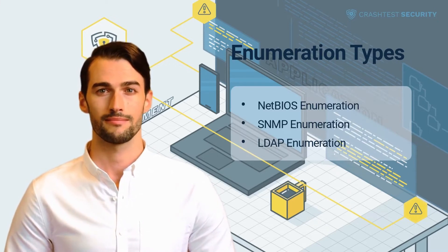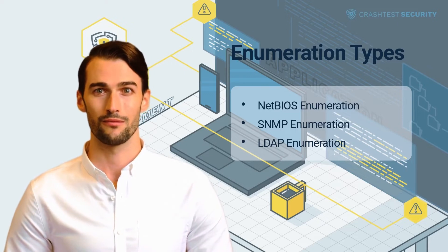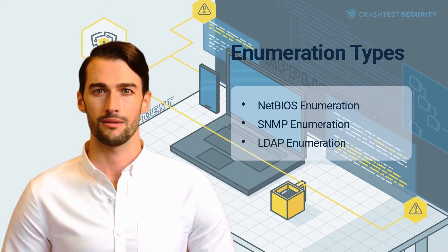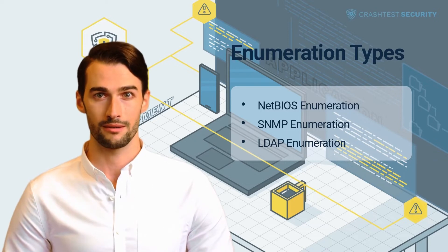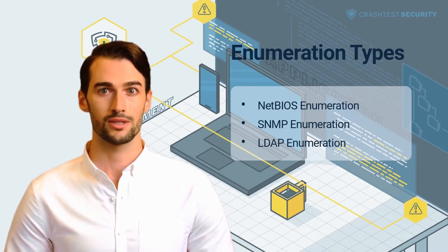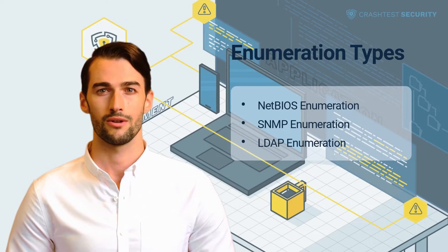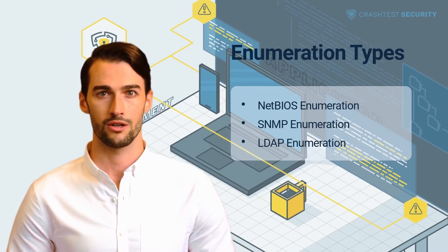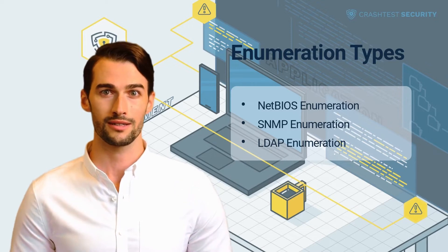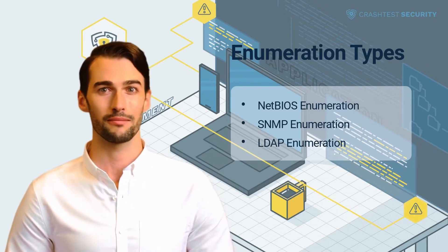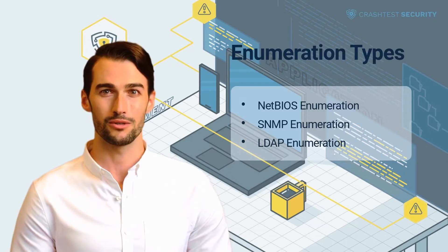The most prevalent forms of enumeration include NetBIOS enumeration. NetBIOS is the basic input-output system that enables applications on separate network devices to connect over LAN, establish sessions, and access shared resources. In NetBIOS network enumeration attacks, hackers use network scanner tools to extract NetBIOS name information from IP networks.